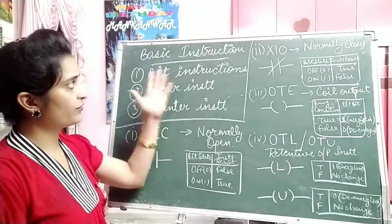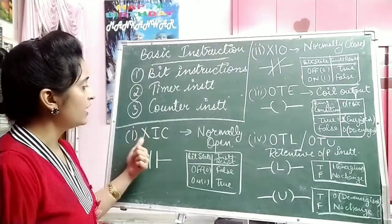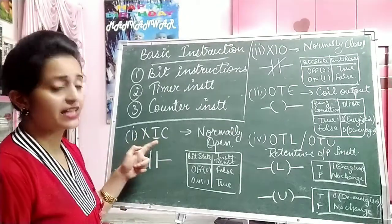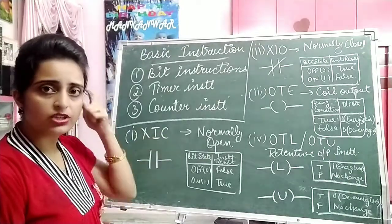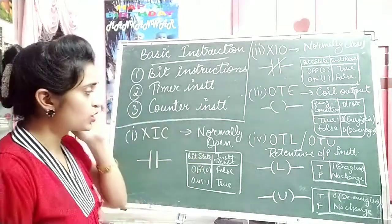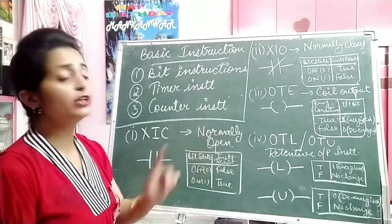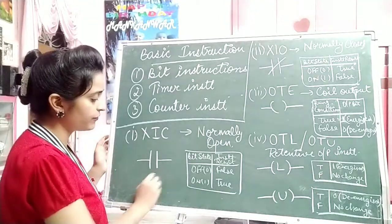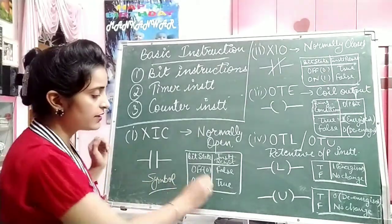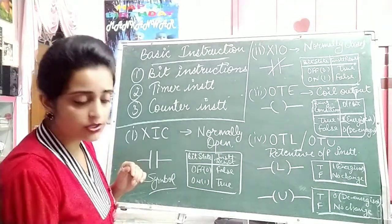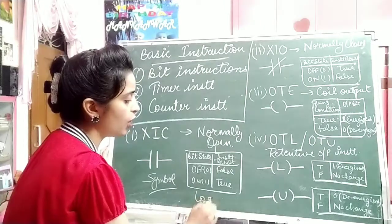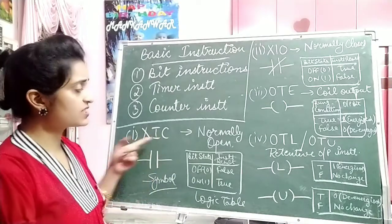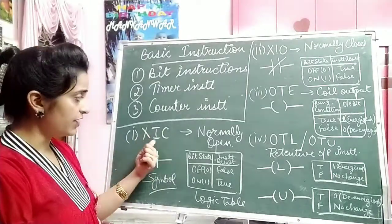The first bit instruction is Examine If Closed, abbreviated as XIC. This is basically a normally open kind of instruction. This is the symbol of the XIC instruction, and this is the logic table for it. So the logic table for XIC — Examine If Closed — means examine or check whether it is closed or not.